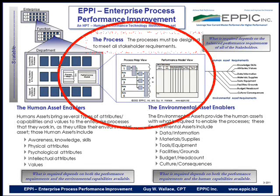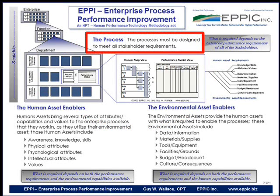We first look at the process and want to understand whether it has already been designed to meet all of the stakeholder requirements. If it does not, you must start there. There's no sense buying or building new machinery for a faulty process. The late Gary Rummler is quoted to say: put a good performer in a bad system, and the system wins every time. The same is true at the process level.